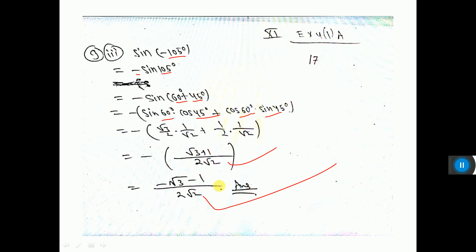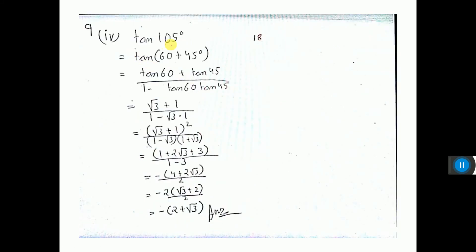For tan 105°: write as tan(60° + 45°). Using tan(A + B) = (tan A + tan B) / (1 - tan A · tan B). Substituting tan 60° = √3 and tan 45° = 1. Multiply numerator and denominator by the conjugate (1 - √3). Denominator: (1 - √3)(1 + √3) = 1 - 3 = -2. Taking 2 common in the numerator to cancel, this gives the final answer.